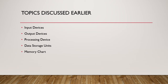Next, we are having processing device. CPU is the processing device, and the full form of CPU is Central Processing Unit. We call CPU the brain of the computer. Next, we have discussed about the data storage units and the memory chart.